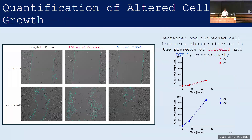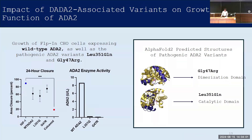Before directly investigating ADA2-mediated effects, I established positive and negative controls for the assay. Colcemid, a microtubule inhibitor, and recombinant insulin-like growth factor have been shown to decrease and increase cell-free area closure respectively. An LDH assay did not indicate colcemid-induced cytotoxicity at concentrations as high as 200 nanograms per milliliter, and a cell proliferation assay indicated that growth of CHO cells is improved in the presence of IGF-1. Recent experiments examined differences in growth between parental and CHO cells transfected to express wild-type ADA2 as well as two DADA2-associated variants. Both pathogenic variants result in abrogation of catalytic activity, confirmed in an adenosine deaminase 2 activity assay.